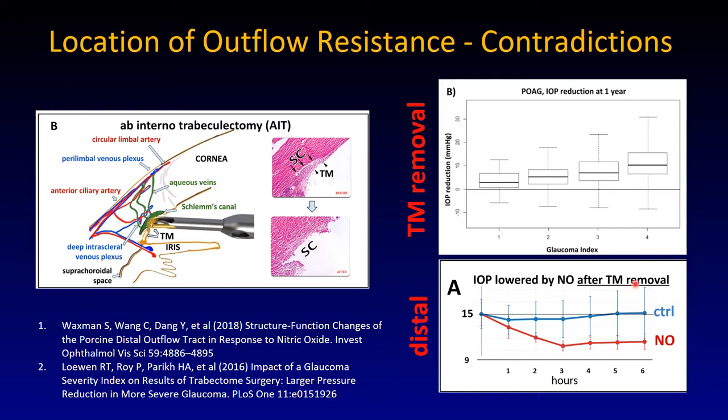However, one can also observe that after removing the trabecular meshwork there can be an additional pressure drop — for instance after giving nitric oxide. This is a tissue culture model using porcine eyes. It is important to have very fresh eyes to allow these vessels to react to substances.